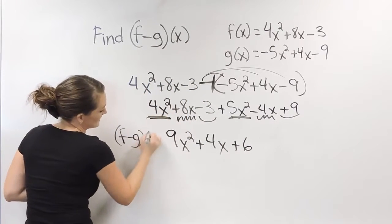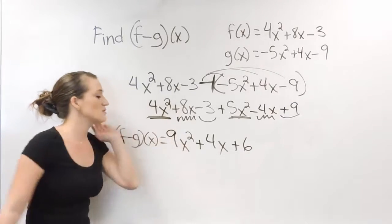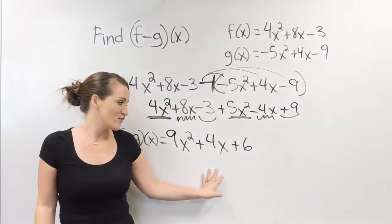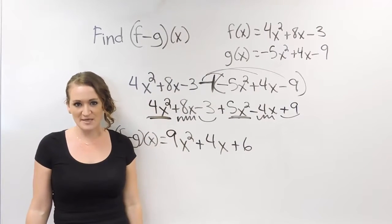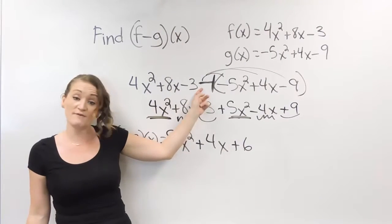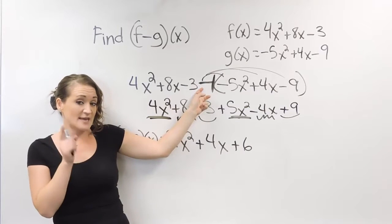So (f - g)(x) is equal to 9x² + 4x + 6. So take f(x), subtract g(x) from it. Make sure you do remember to take care of that negative sign first, though. That is very important.